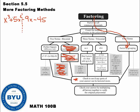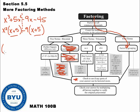Factor by grouping: I cut the problem in half and factor the left side, so I get x squared, and I'm left with x plus 5. Then I factor out the right side — looks like I can take out a minus 9, leaving me with x plus 5. So I divide by negative 9 and get x plus 5. I've got a common parenthesis, so I pull that out and I'm left with x plus 5. What's left over once I pull the parentheses out is x squared minus 9.